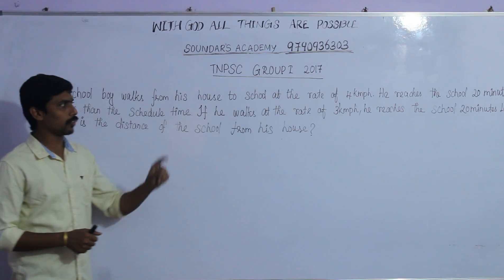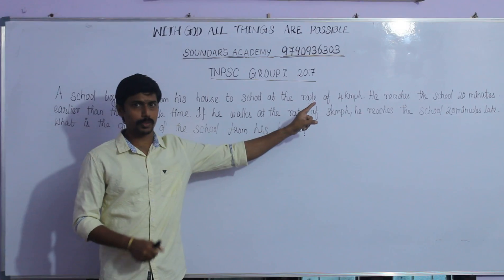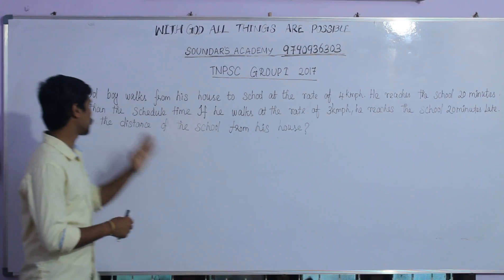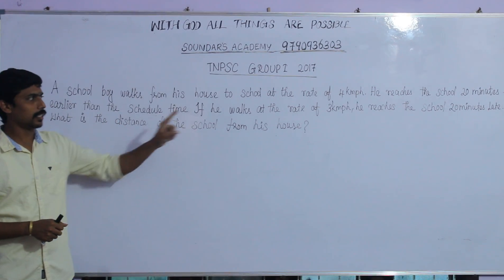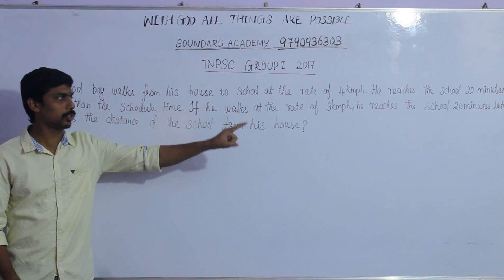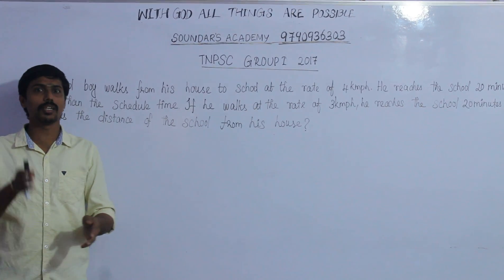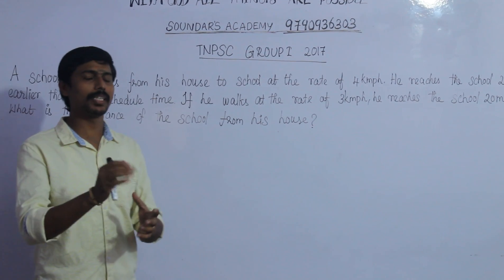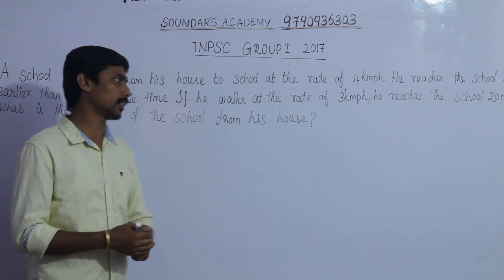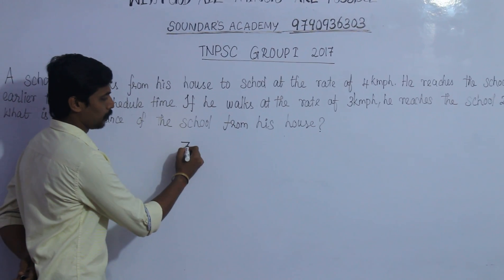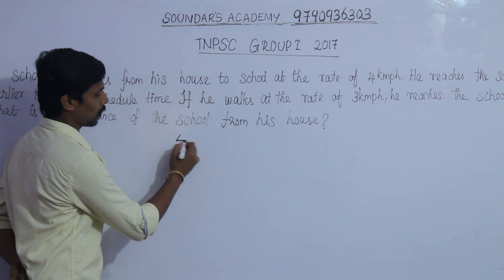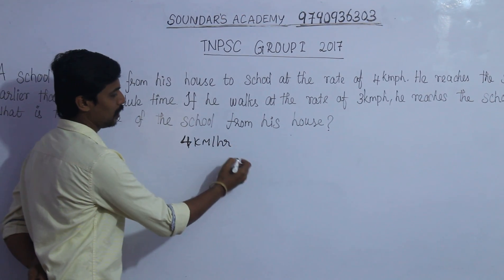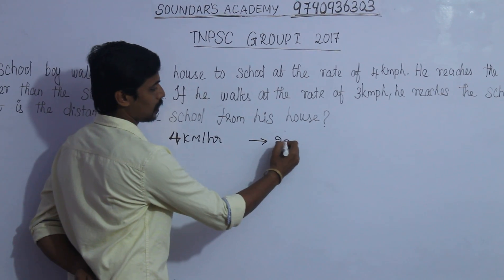A boy walks from his house to school at the rate of 4 km per hour and goes to school 20 minutes earlier. If he walks at the rate of 3 km per hour, he goes to school 20 minutes later. So, the distance from his house to school is what we need to find.